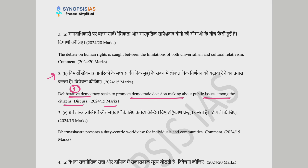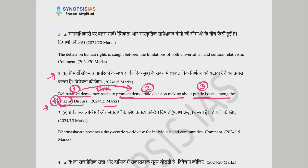What does deliberative democracy do? It promotes democratic decision-making — that is the second part, and that is what we have to answer: how does it promote democratic decision-making? It promotes this about public issues — that is the third part — and among the citizens — that is the fourth. Since the question mentions public issues among citizens, citizens are very obvious here, so we can leave that aside and focus on the main elements.